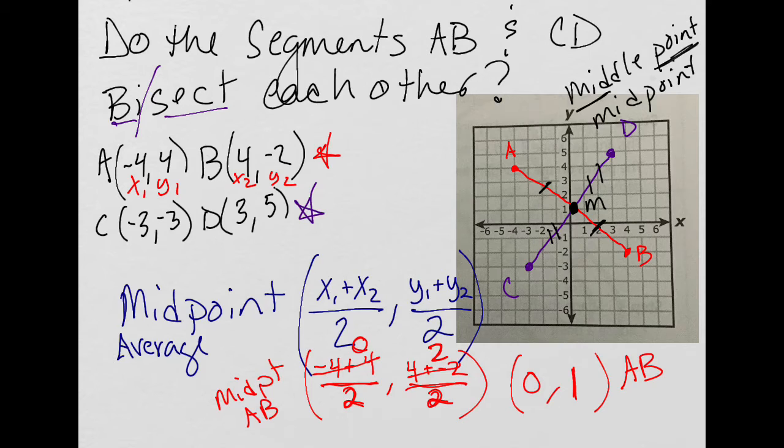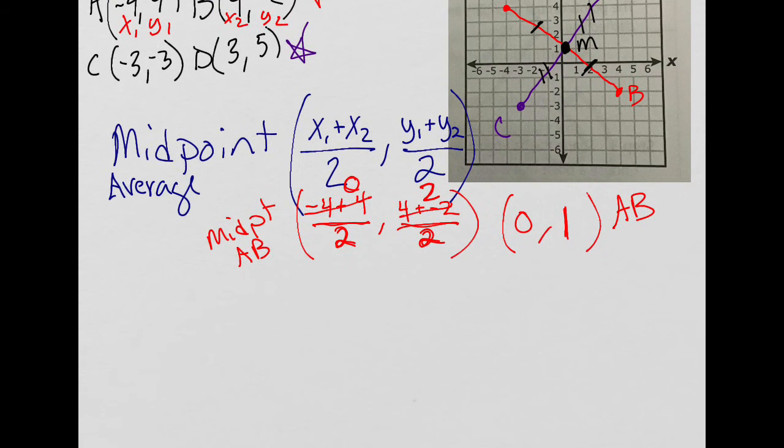So now the goal is actually to find the midpoint of CD, and if they're the same, that would mean that they have bisected each other. Not just that one's bisected the other, but that they've bisected each other back and forth. So let's look at CD.